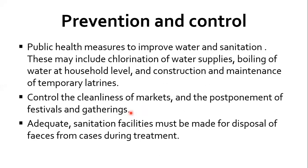In terms of prevention, we just have to understand the transmission cycle and how the bacteria behaves. Because it's a fecal-oral disease transmitted through contaminated water or food, you just have to make sure water is handled very well. Boiling of water is very important, as is cleanliness, hygiene, and adequate sanitation facilities for the disposal of feces. All these measures can be used to control cholera, and if not done, cholera can easily kill somebody very fast.